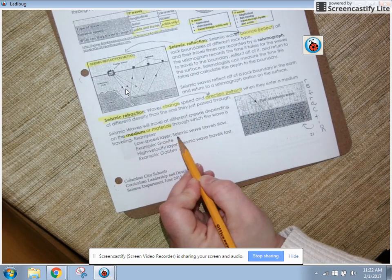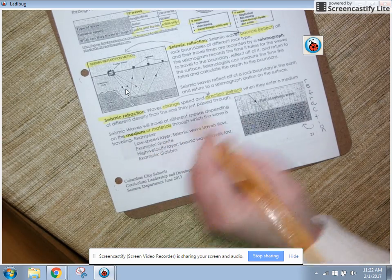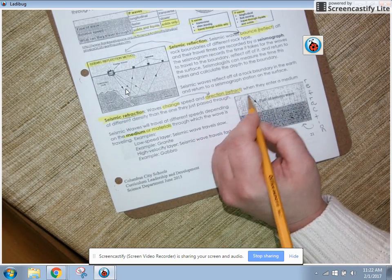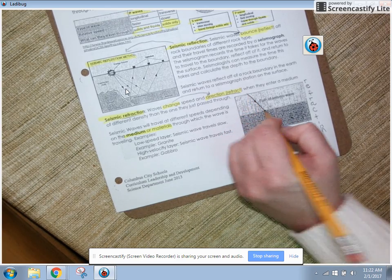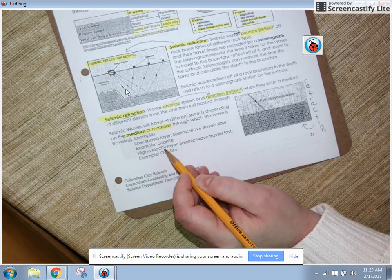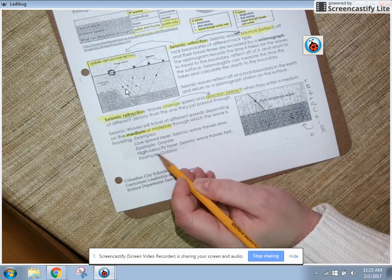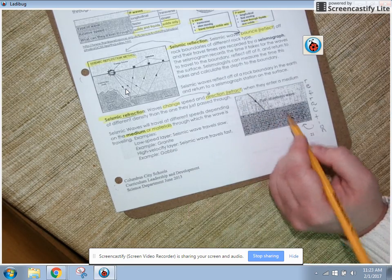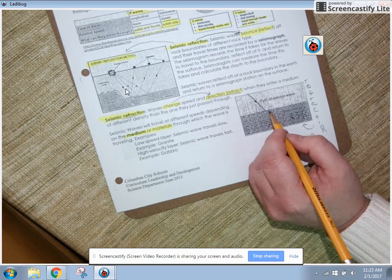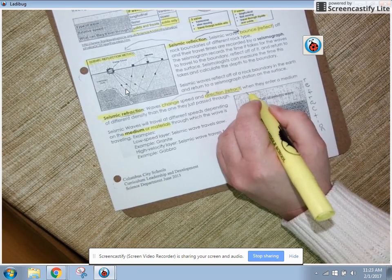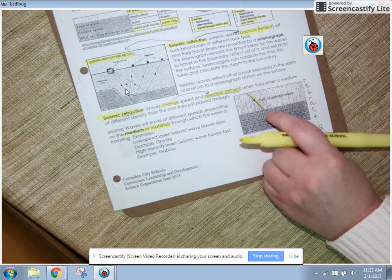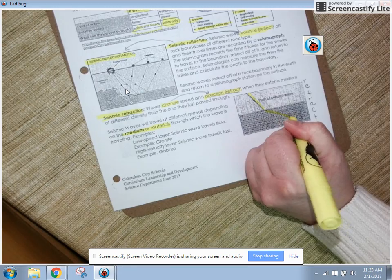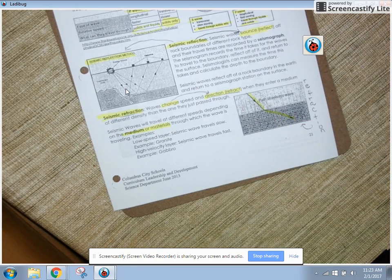So examples, low speed layer, seismic wave travel slow. So here, let's say that this is granite. My seismic wave is traveling here. And then it hits, let's say this is gabbro. They talk about that seismic waves travel faster when they hit gabbro, probably because this is a much denser rock. And you can see that it changes its direction. It doesn't bounce back. It doesn't reflect. It just changes its direction as it enters that new layer. And that is what we refer to as refraction.